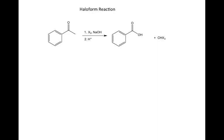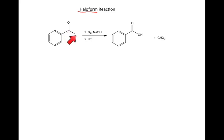In this video we're going to be talking about the haloform reaction. This is a reaction that involves a methyl ketone — you have to have a ketone where one side is a methyl group. Upon treatment with a halogen — chlorine, bromine, or iodine — and base, followed by an H-plus workup,